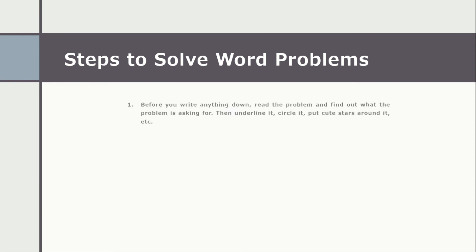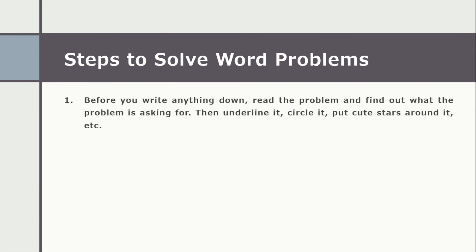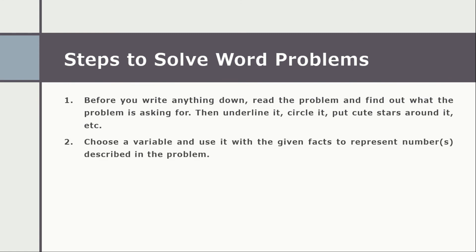Step number one: before you write anything down, read the problem and find out what the problem is asking for. Underline it, circle it, put stars around it, etc. In this step, reading comprehension is a must. Step number two: choose a variable and use it with the given facts to represent the numbers described in the problem.